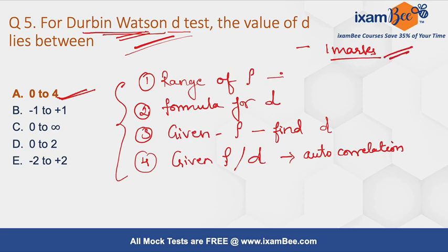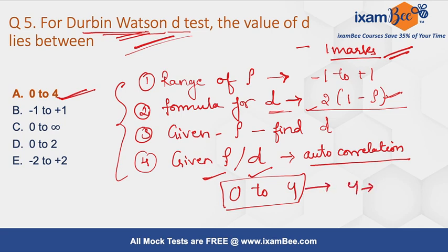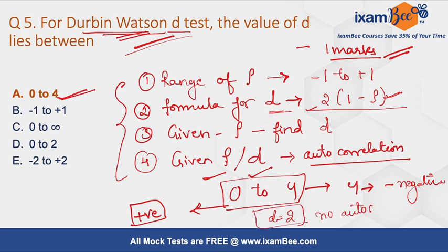The value of rho lies between minus one to plus one. The formula to calculate d is 2(1 minus rho), so if you are given the value for rho you can easily calculate d. Regarding interpretation: if d approaches 4, there is negative autocorrelation; if d approaches 0, there is positive autocorrelation; and if d equals 2, there is no autocorrelation.